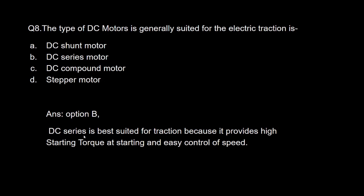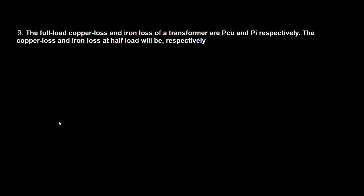The next question: which type of DC motor is generally suited for electric traction — DC shunt motor, DC series motor, DC compound motor, or stepper motor? The correct option is DC series motor, because DC series motors provide high starting torque and their speed control is easier as compared to DC shunt motors or separately excited motors. This is the main reason DC series motors are used for traction purposes.